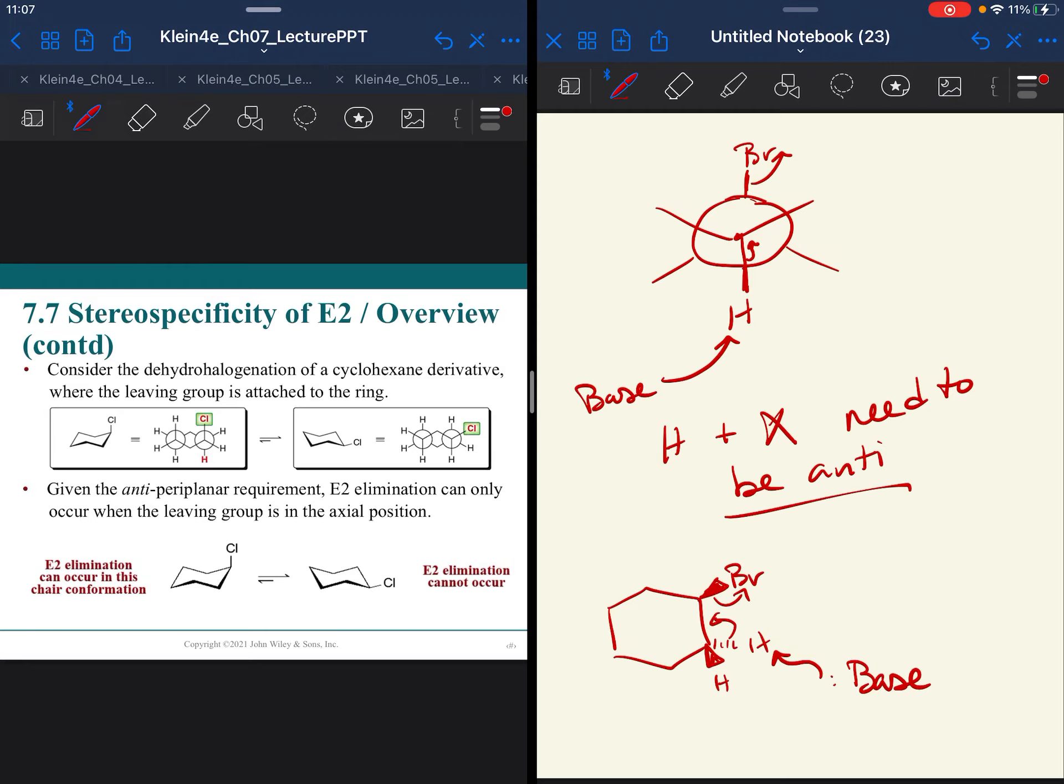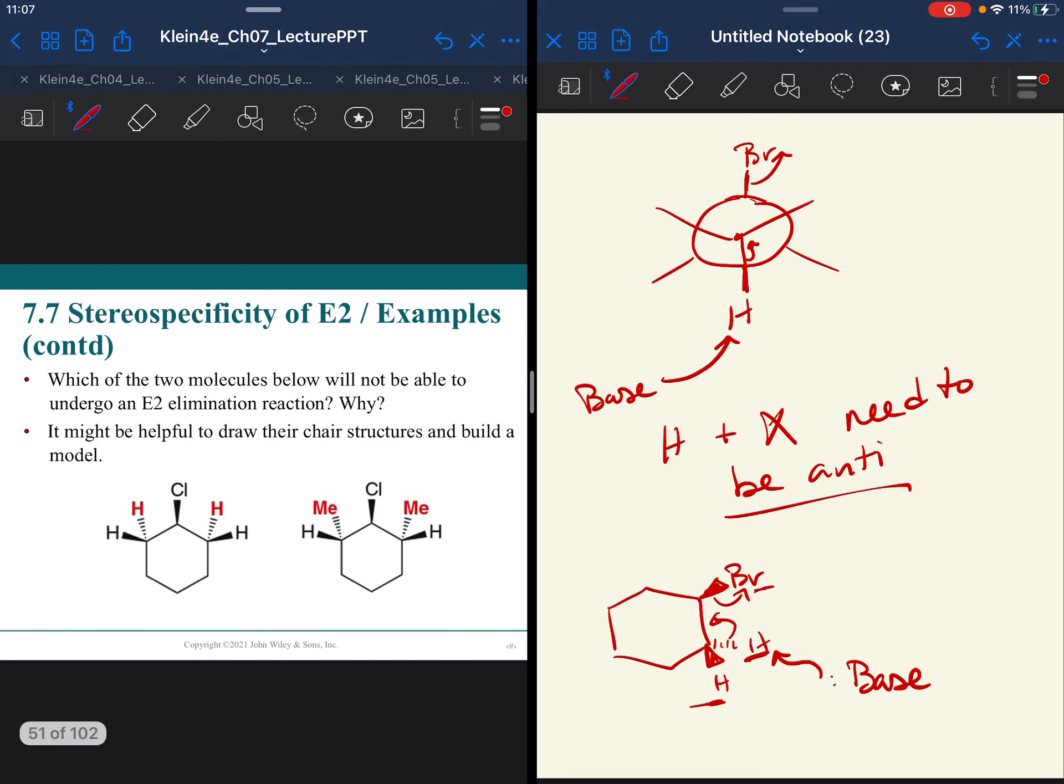We see in the ring here you can use the Newman projections to see how this hydrogen that's going back can be anti to the bromine coming towards you, but the hydrogen coming towards you cannot. And so it affects whether or not elimination can even occur.